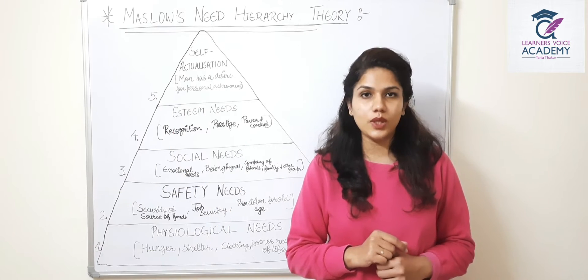When social needs are fulfilled, they are followed by esteem needs. In esteem needs, we get prestige, status, power, and control. People want recognition for their achievements and want to be acknowledged according to their status. These are our esteem needs.